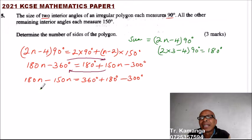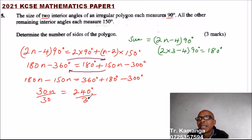180n minus 150n gives you 30n equals 360 plus 180, that gives you 540. You can use your calculator if you're not able to add up in your head. 540 minus 300 you end up with 240 degrees. So you divide by 30, you get n equals 8.